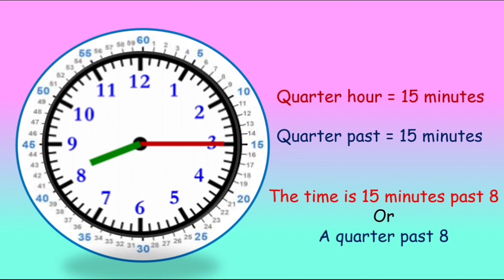So we say the time is 15 minutes past 8 or a quarter past 8. That means after 8 o'clock the minute hand has travelled a quarter of the circle. There are two ways of saying the time: 15 minutes past 8 or a quarter past 8.